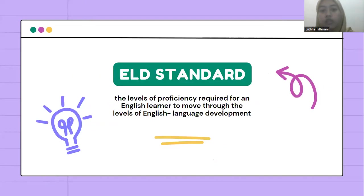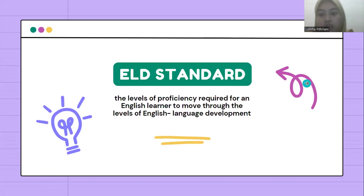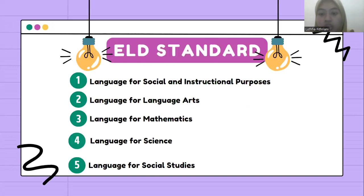Let's start with the first topic, ELD standard. The ELD standard defines the levels of proficiency required for an English learner to move through the levels of English language development. There are five standards in ELD.